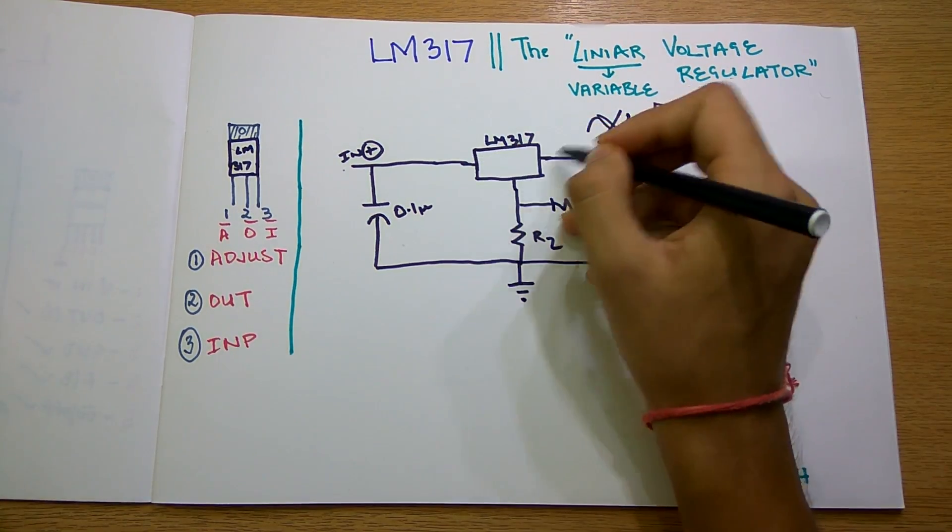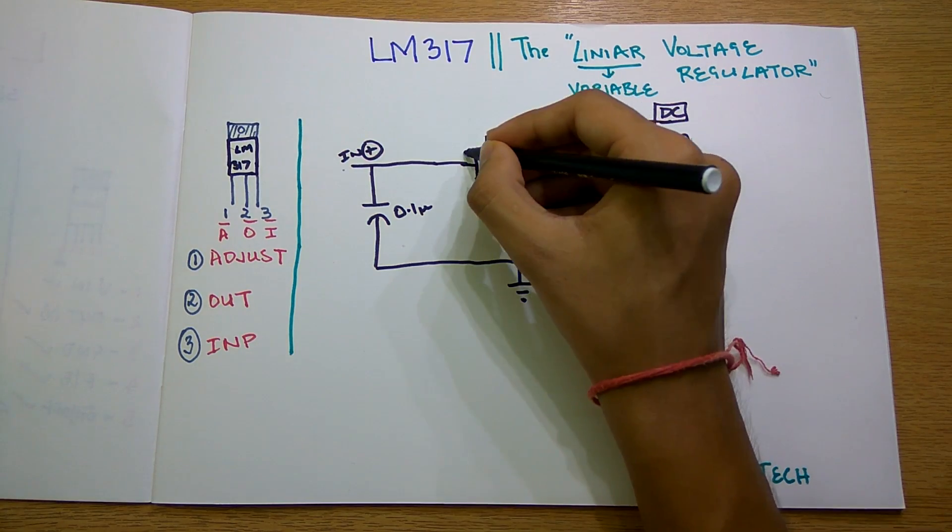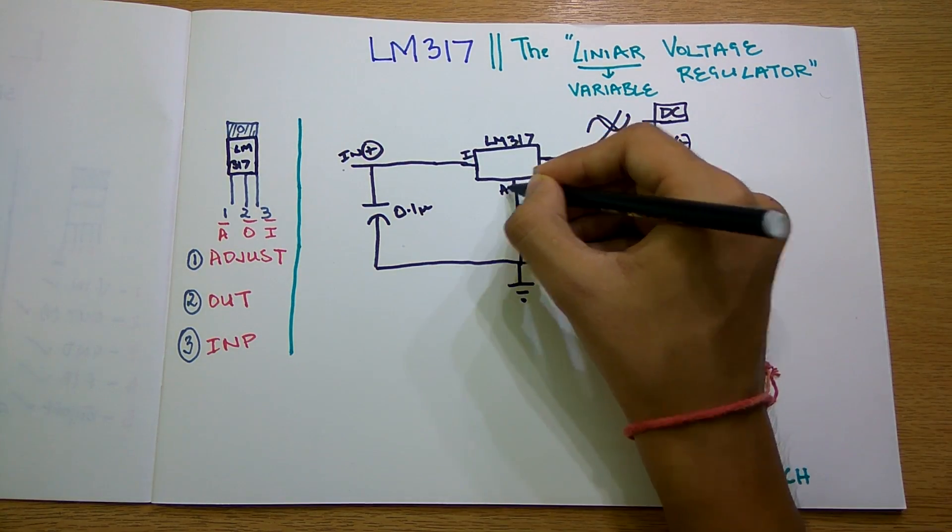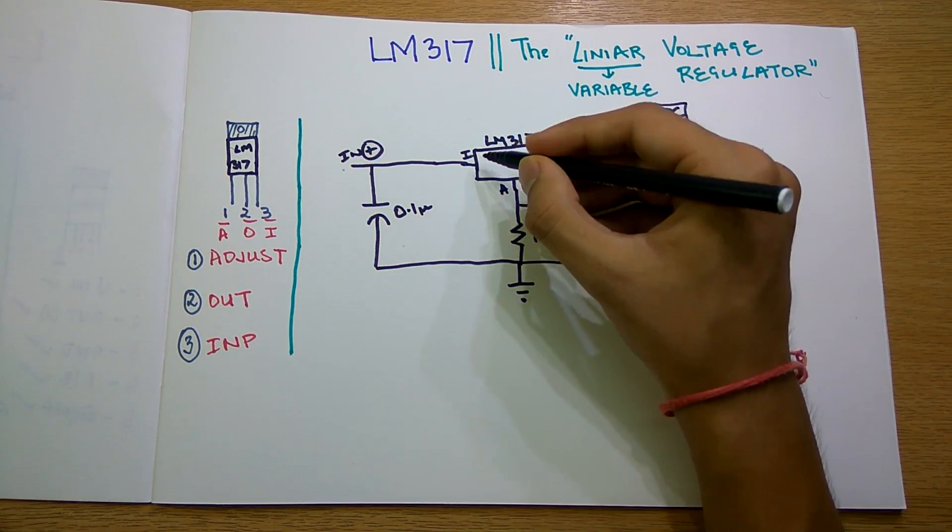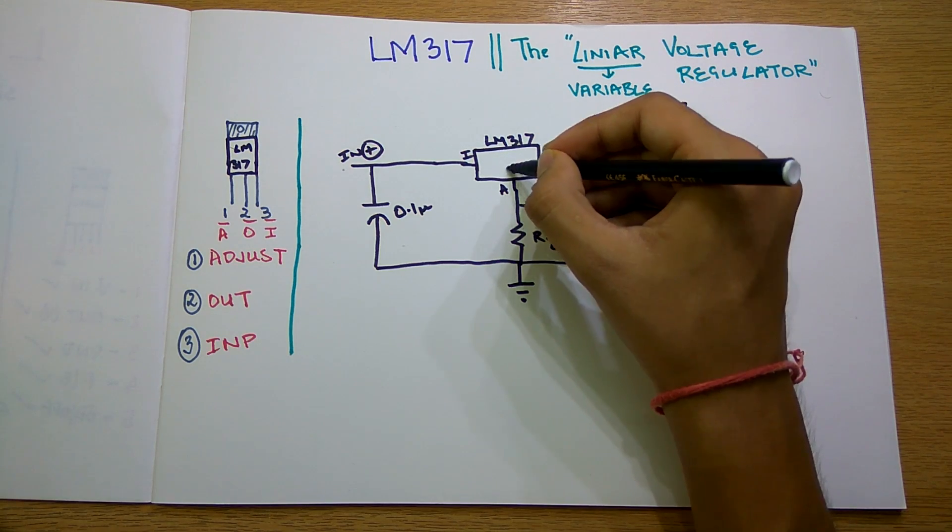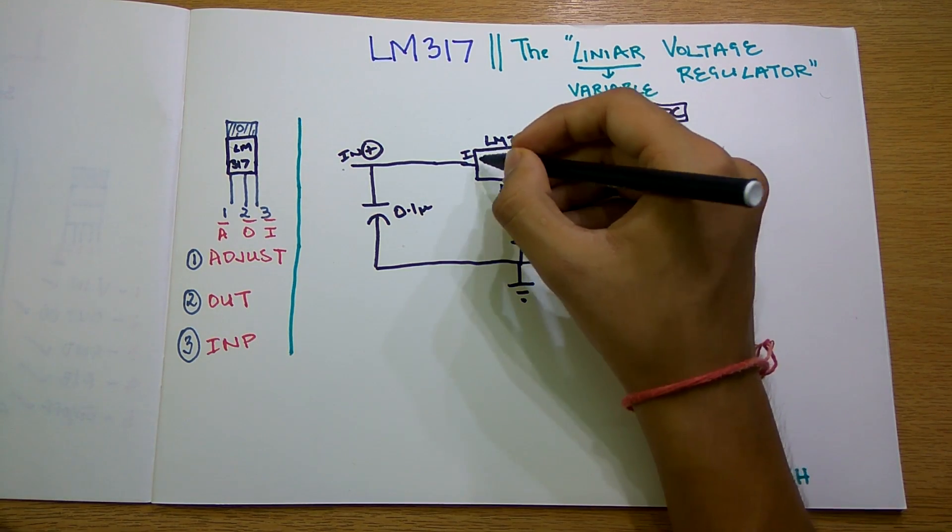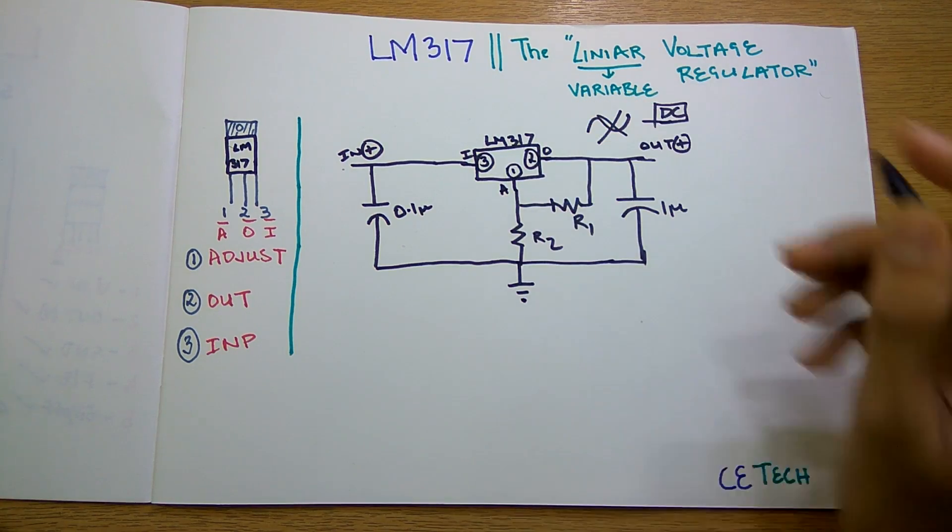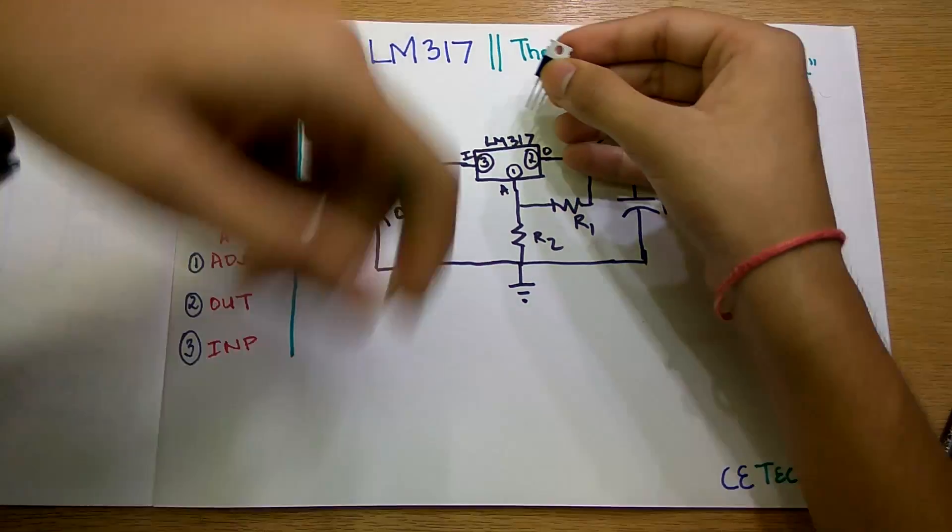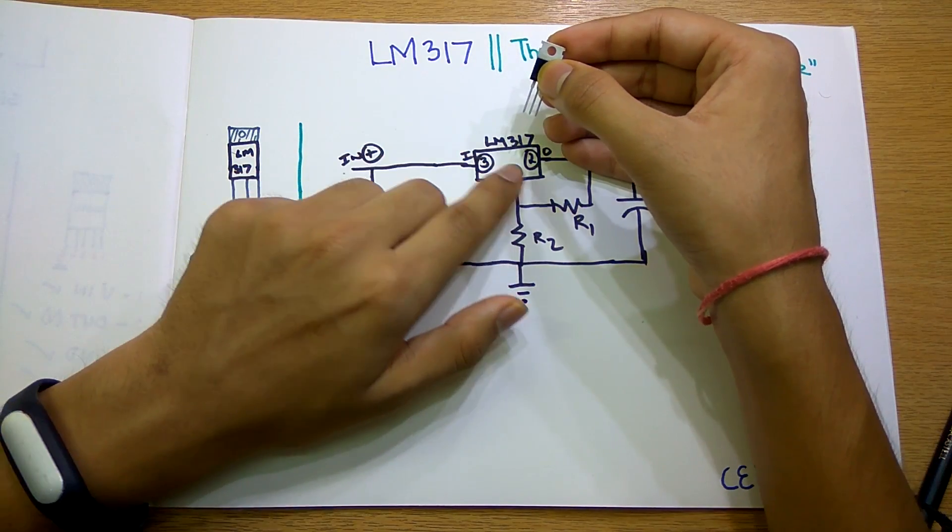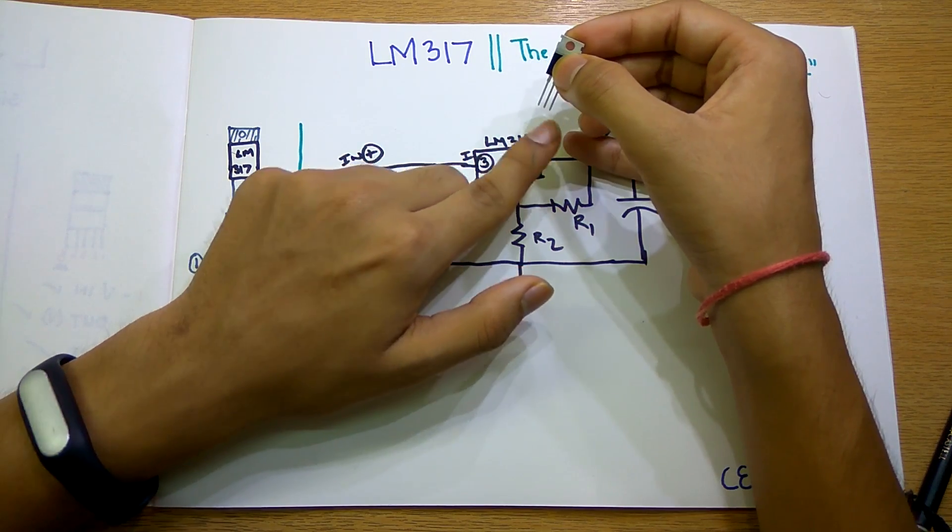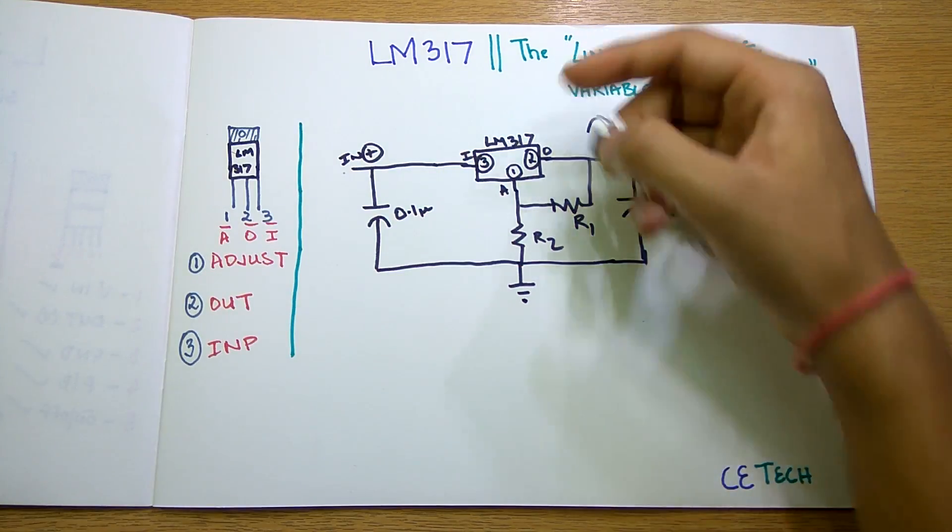The three pins here: this is input, this is adjust, and this is output. This is pin number 1 (output), pin number 2 (adjust), and pin number 3 (input). So this pin is connected here, this pin is connected here, and this pin is connected here.